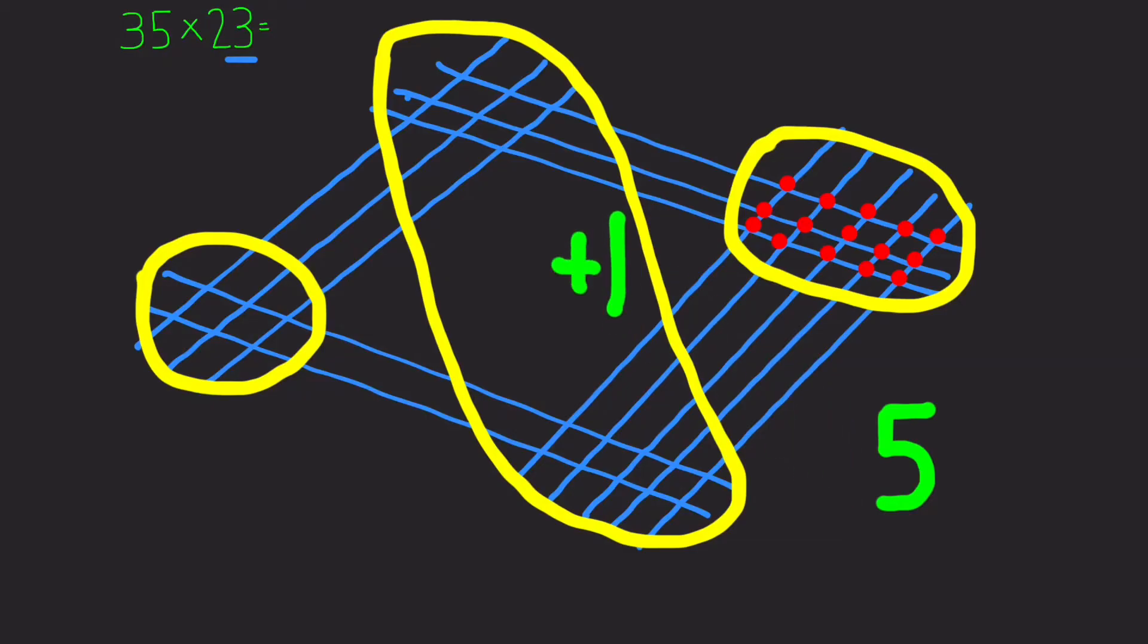So in the middle we have 1, 2, 3, 4, 5, 6, 7, 8, 9, which of course adds together to 20. And then we do the same again and move the 2 over to the next section.